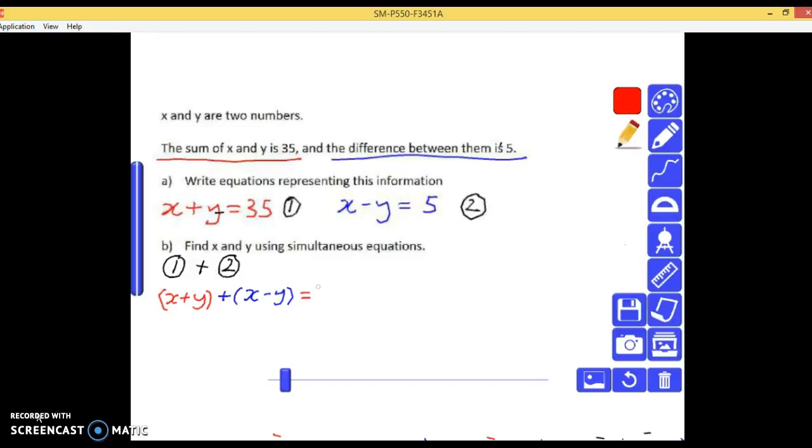So 35 plus 5. Okay, so there we go. Y plus negative y goes away, they cancel one another, and we're left with like terms x plus x makes 2x. And 35 plus 5 makes 40, which means we divide both sides by 2 and get x equals 20.